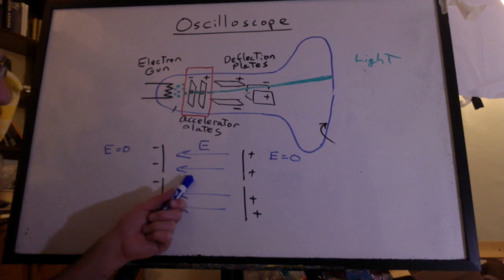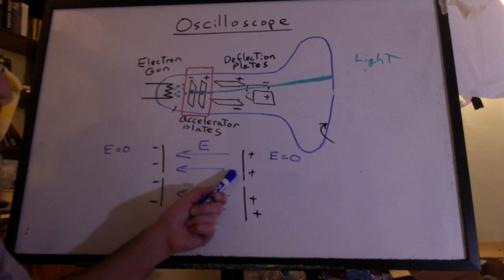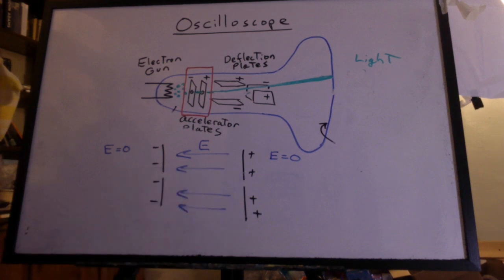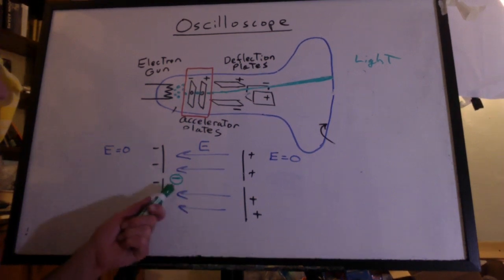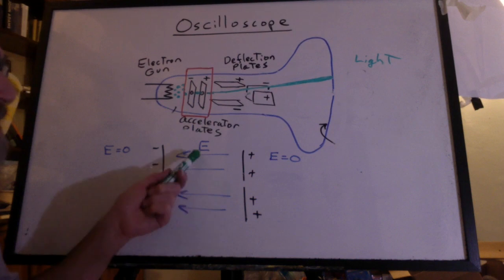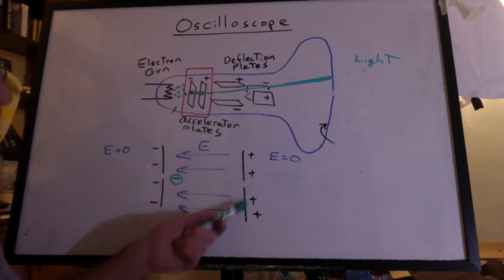But in between, the positive plate has a field this way and a negative plate has a field this way. So they build up and are stronger going to the left. Now I don't have a positive test charge. I actually have a negative electron. The negative electron is going to go in the opposite direction of that field. It's going to go towards the positive plate.